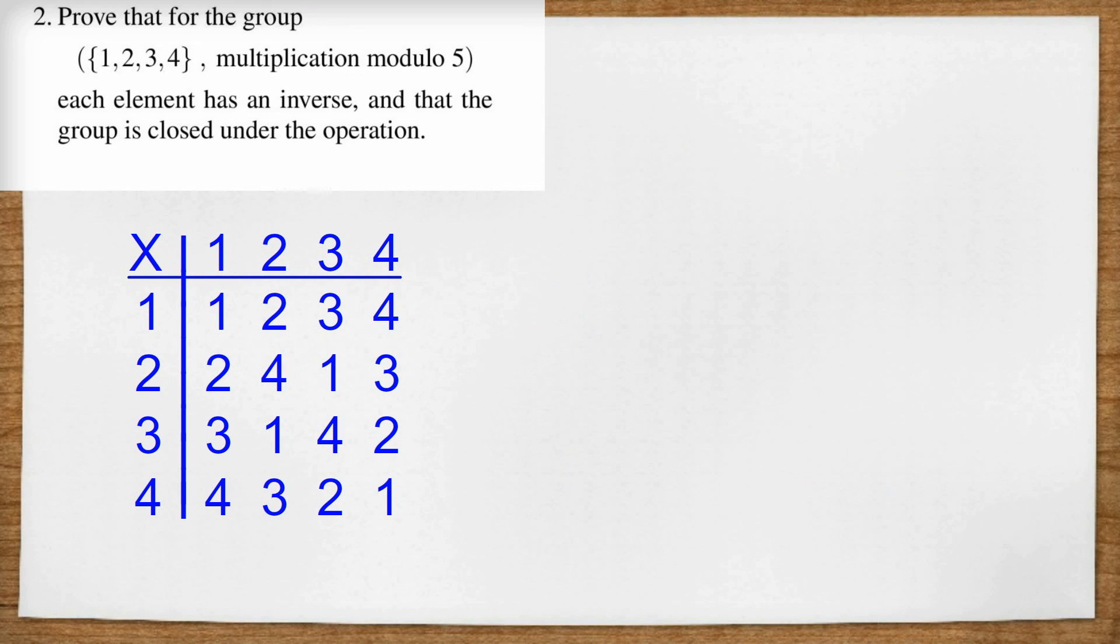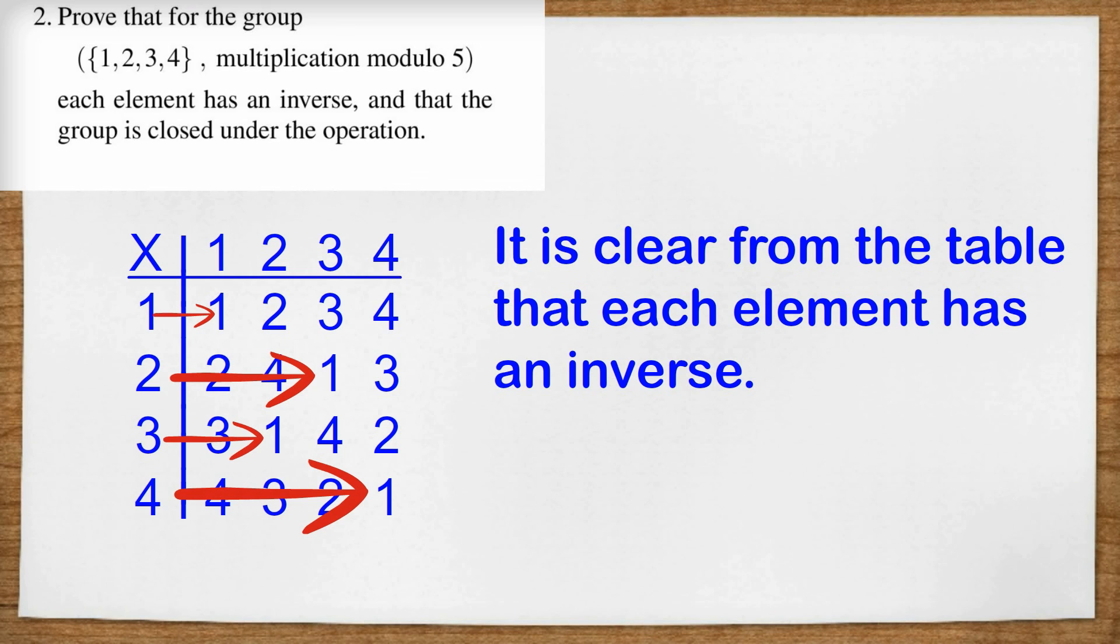To show that each element has an inverse, the easiest way here is just to write out a multiplication table like we used to do in primary school, but instead we're going to do it modulo five. So here's the table. We saw before that three by four equals two, and here's the complete table. You can see that each element has an inverse so that for any element we take, one, two, three or four, it's always possible to find another element so that when we multiply modulo five, we get one. So it is clear from the table that each element has an inverse.